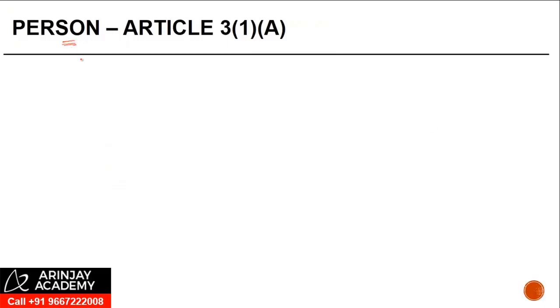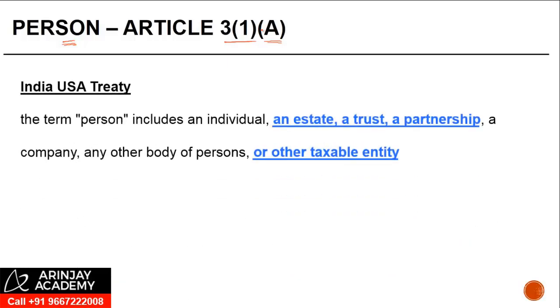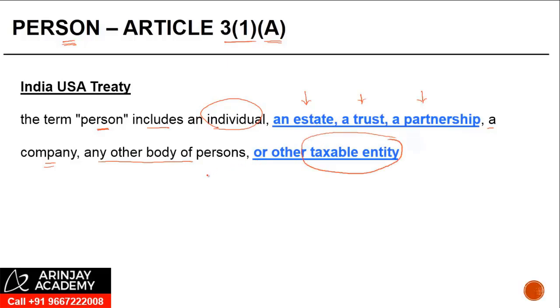Next comes the question of what is the meaning of 'person.' In some cases you may find that the term 'person' is defined in Article 3, sub-article 1, clause A. If we look at the India-USA treaty, it says the term 'person' includes an individual, an estate, a trust, a partnership, a company, any other body of persons, or other taxable entity.